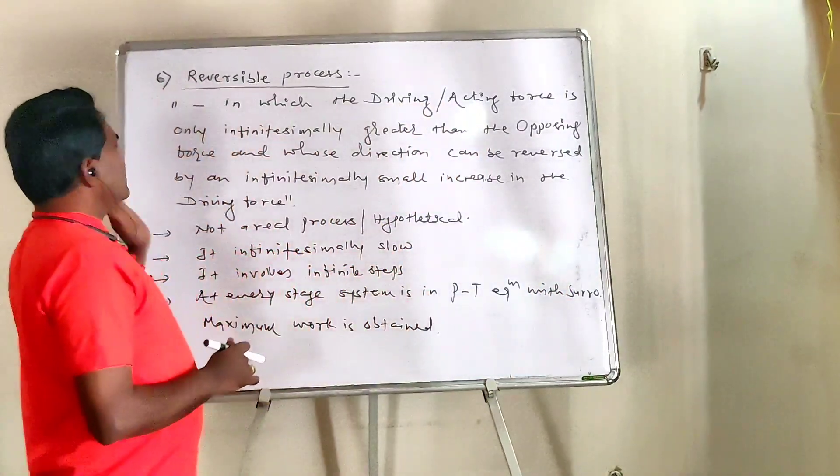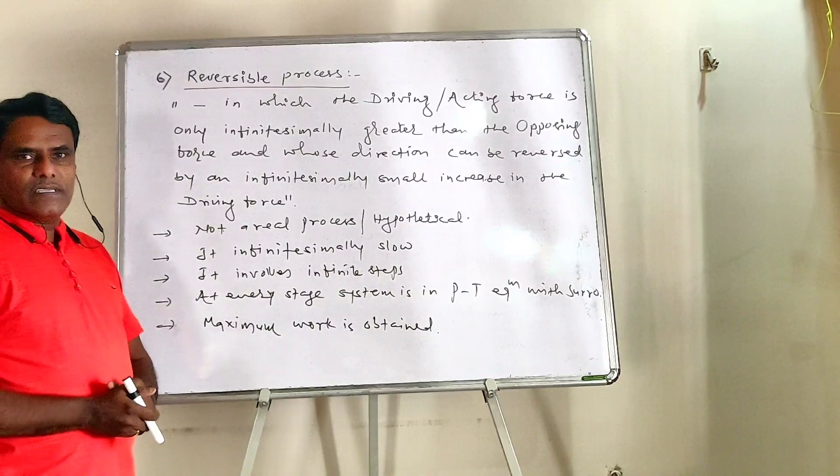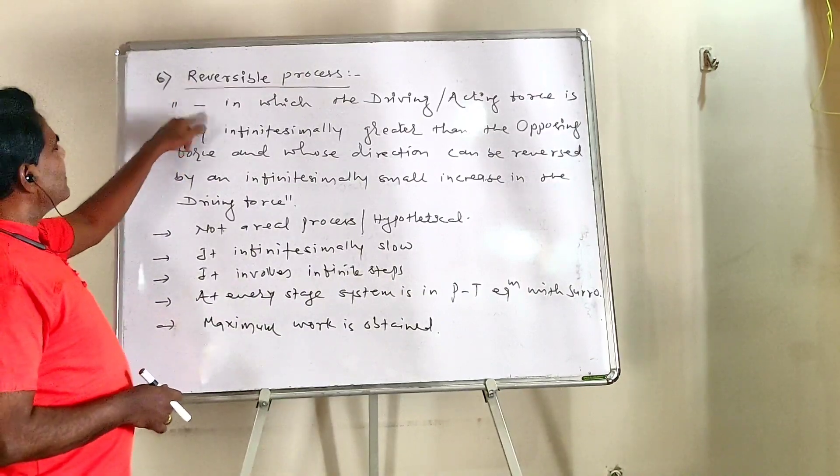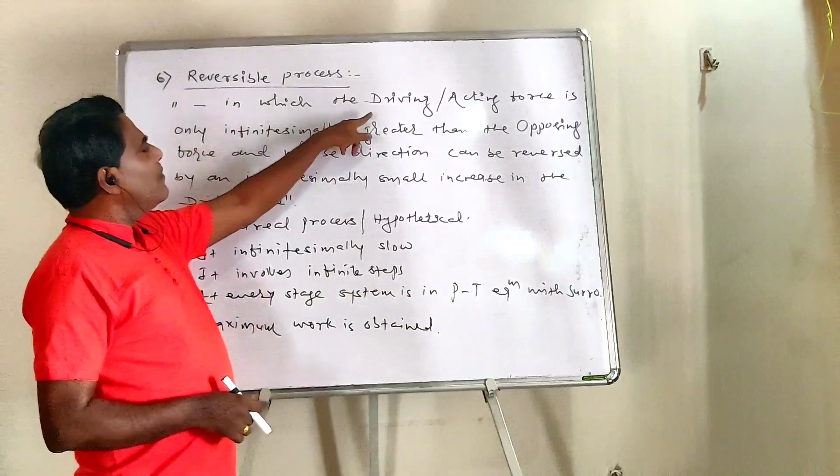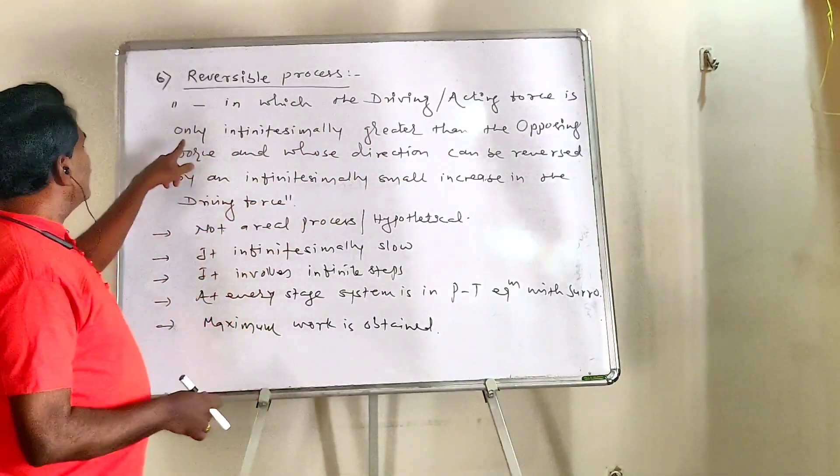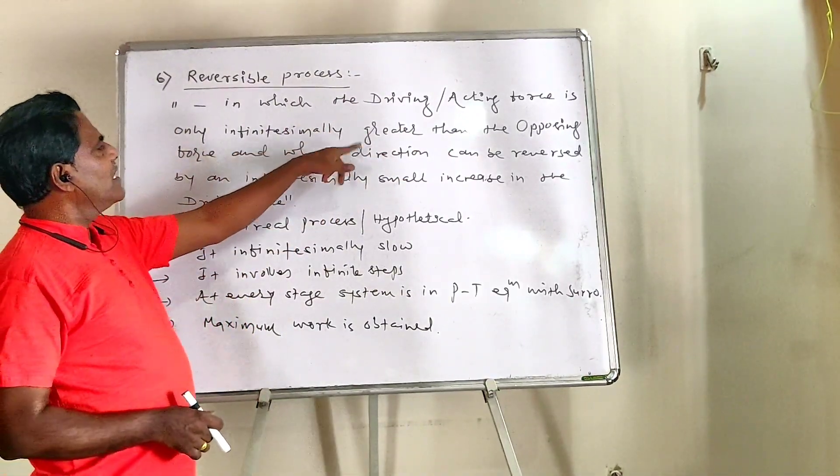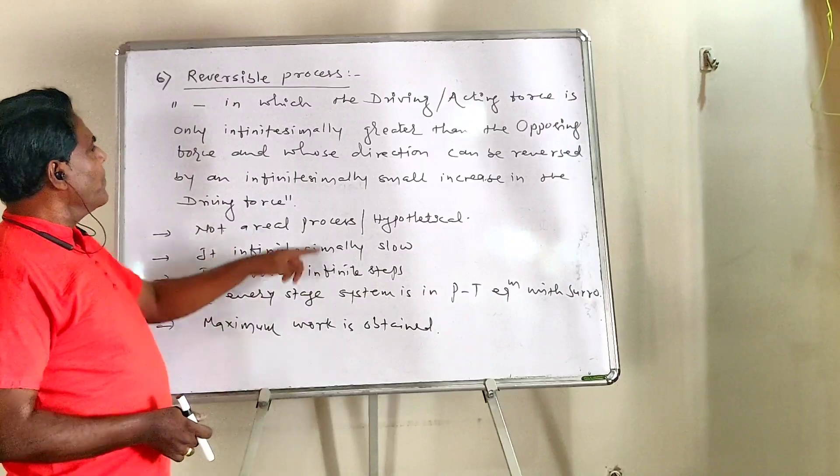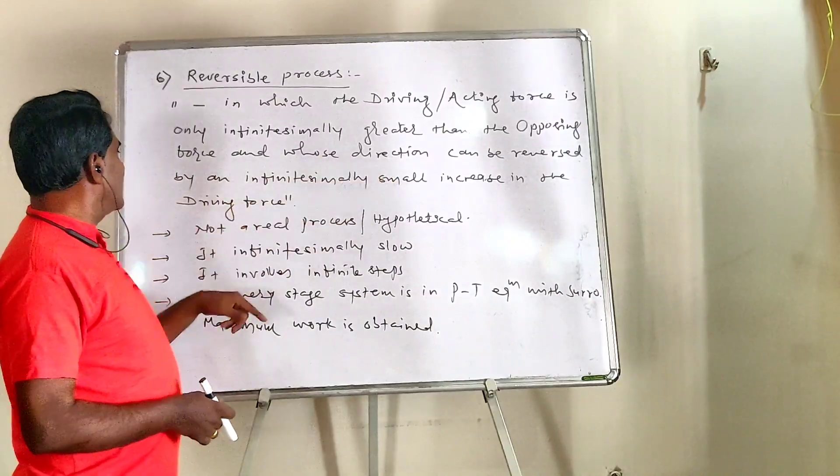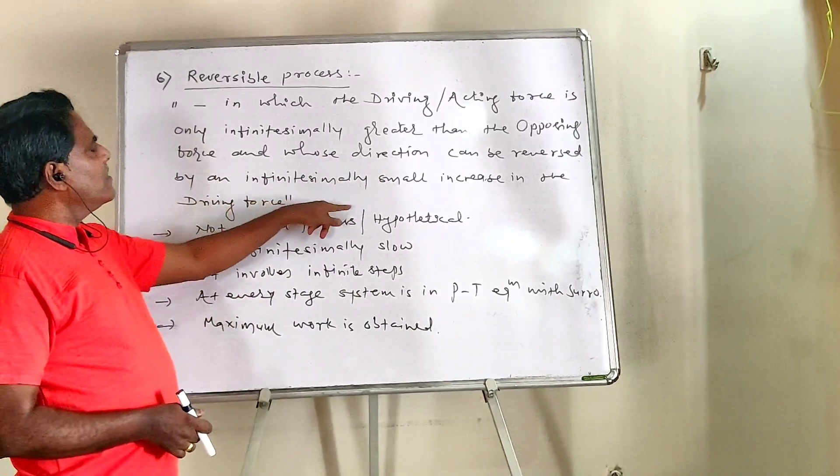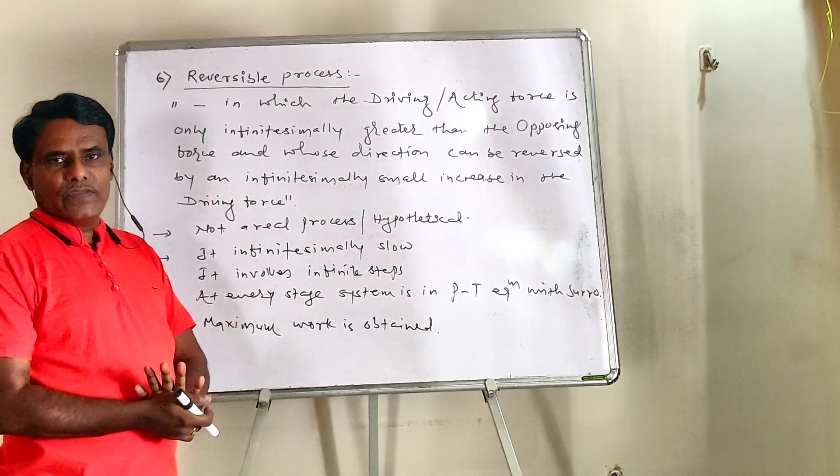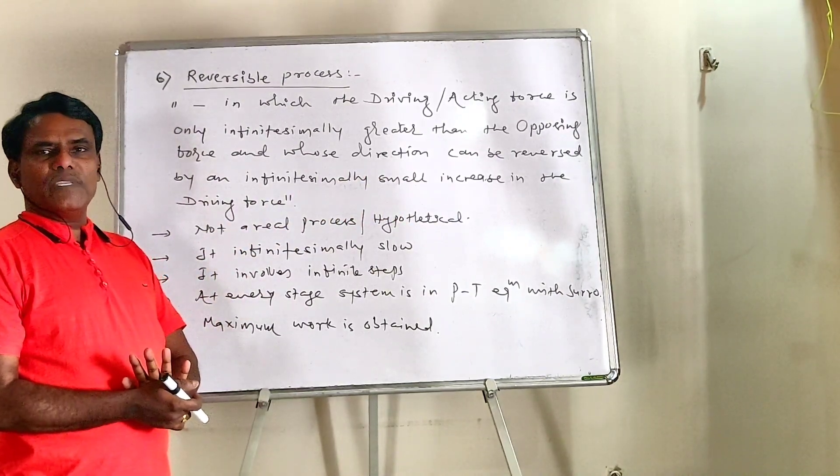Now process number six: Reversible process. See what it is. It is such a process in which the driving or acting force is only infinitesimally greater than the opposing force, and whose direction can be reversed by an infinitesimally small increase in the driving force.